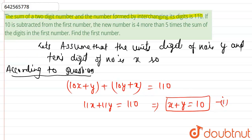Now, we're given that if 10 is subtracted from the first number, the new number is 4 more than 5 times the sum of the digits.